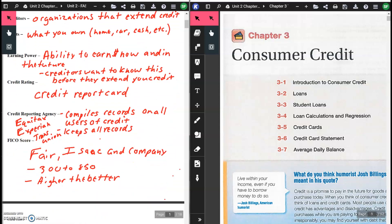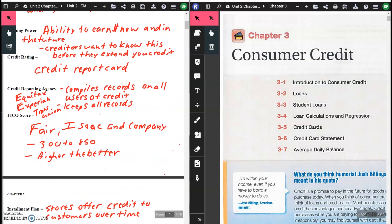Creditors want to know this before they extend you credit. Credit rating is a report card of your credit. We have credit agencies - these compile records on all users of credit. They keep all of your records. There are three big ones: Equifax, Experian, and TransUnion. FICA score is the Fair Isaac and Company. It ranges from 300 to 850, and the higher your number, the better your credit score is.